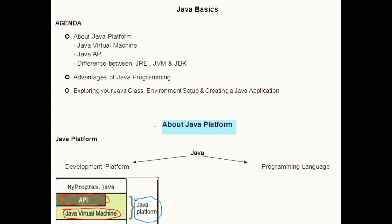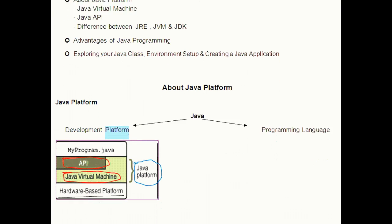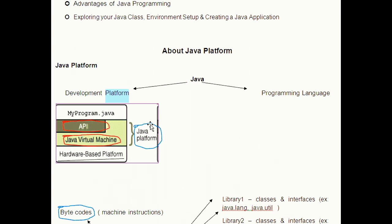Java is both a programming language and a development platform. A platform is either a software or hardware environment in which a program runs. Java Platform is a software environment in which you can run your Java programs. It has two components: Java Application Programming Interface and JVM.